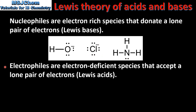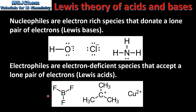Electrophiles are electron deficient species that accept a lone pair of electrons. They are Lewis acids. Examples of electrophiles include boron trifluoride, the carbocation, and the copper 2+ ion.